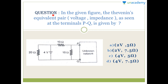Now let's start with the question. Read it carefully. In the given figure, we are asked to find the Thevenin equivalent pair: voltage and impedance. Since we have only resistances here, you have to find RTH (Thevenin resistance) and VTH (Thevenin voltage) as seen at terminal P and Q.